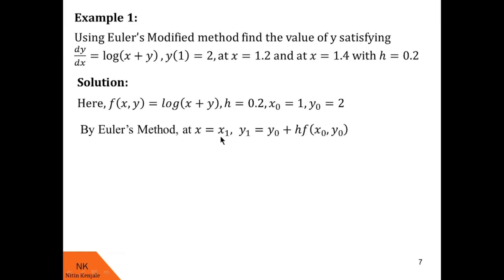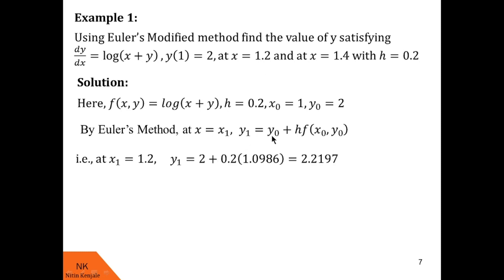By Euler's method, y1 = y0 + h·f(x0, y0). Substituting: y0 = 2, h = 0.2, and f(x0, y0) is calculated by substituting x = x0 and y = y0 into the definition of f. After simplification, we get y1 = 2.2197. This is the value of y1 obtained using Euler's method, after which we use Euler's modified method to find better approximate values.